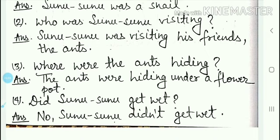The answer is: the ants were hiding under a flower pot. Cheetiyan ek flower pot ke niche ja kar chup rahi thi, yaani ki ek gamla ke niche ja kar chup rahi thi — gamla jisme hum log phool lagate hain ya phir ugate hain.